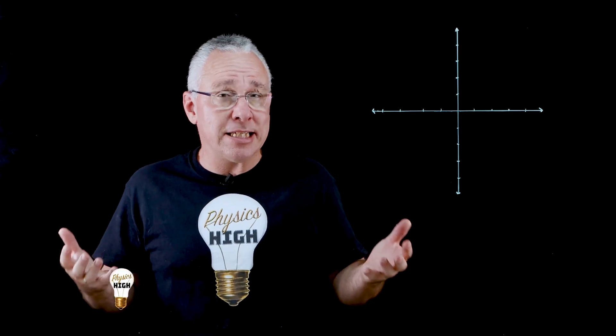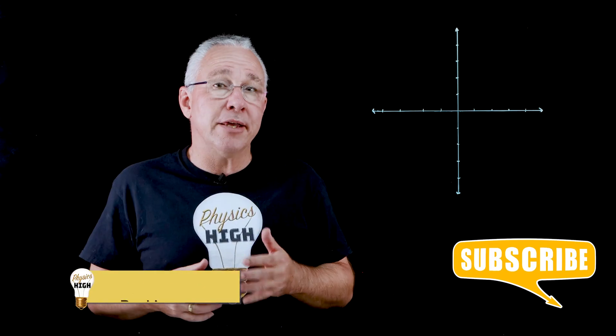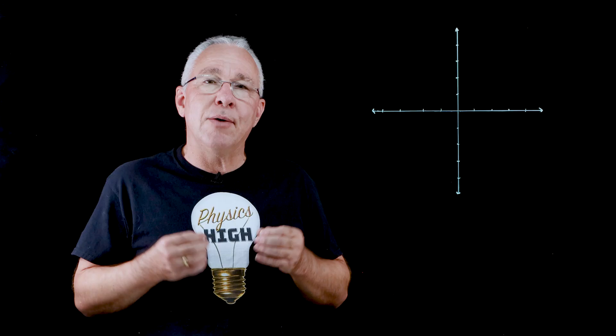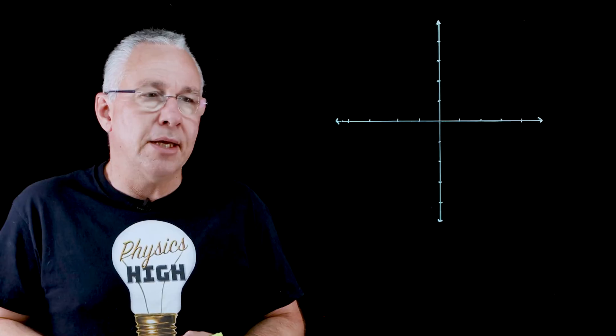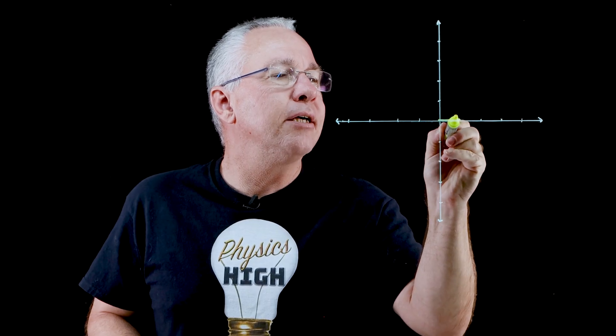Unit vectors are simply vectors that have a magnitude of one, and we usually draw them either in the x and y and, if in three dimensions, in the z direction, and we give them particular labels. In the case of the x direction, my unit vector here would be i.